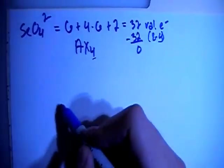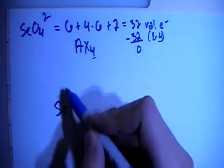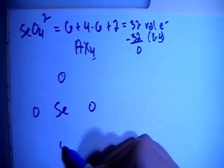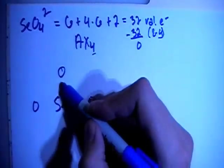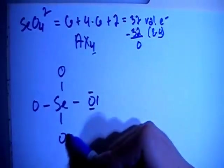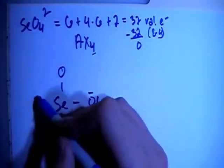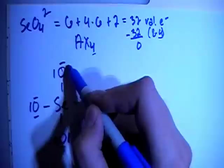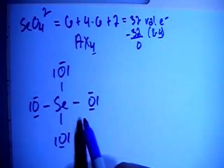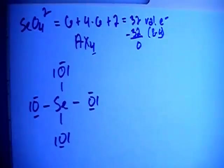The selenium will be in the center, 4 surrounding oxygens, and let's go ahead and single bond all the oxygens and then fill out the oxygen's octets. So now we see every oxygen has the 8 electrons, and so does the central selenium.